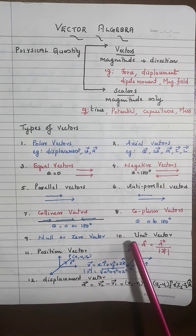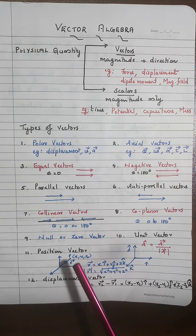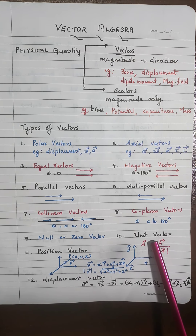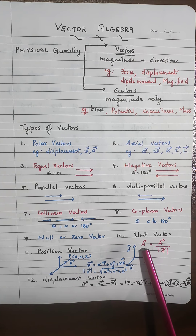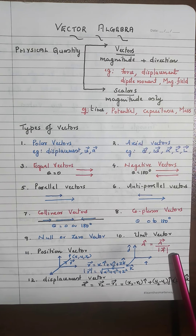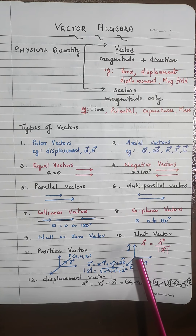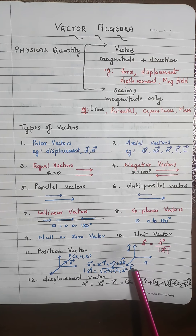The last three important types are: the unit vector, the position vector, and the displacement vector. The unit vector is used to represent the direction of a vector; it is denoted as â (a-cap), and is found as vector A divided by its modulus |A|. The orthogonal unit vectors along x, y, and z axes are denoted î, ĵ, and k̂.